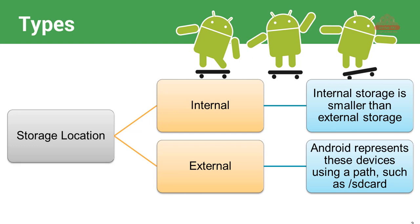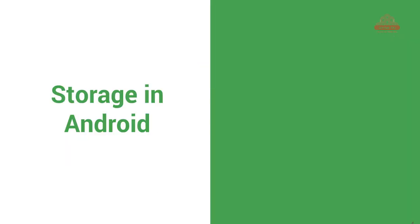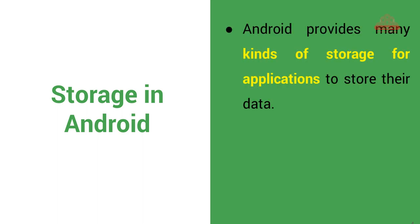याद रखें कि there are two kinds of storage — यह तो बात हुई physical location के types की. यानि कि जब आप store करते हो तो उसका physical location पे अलग-अलग storage होता है. इसके अलावा application level पे कितने types होते हैं? Android provides many kinds of storage for applications to store their data.